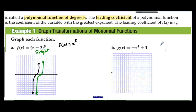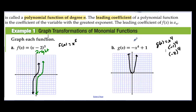Now let's graph g(x) = −x⁴ + 1. The parent function is g(x) = x⁴. Plugging in 0 gives 0, 1 gives 1, 2 gives 16, and negative values give the same positive results since the power is even — so it looks like a flat-bottomed parabola. The negative in front reflects the graph over the x-axis, turning it upside down. Then all points are shifted up 1.